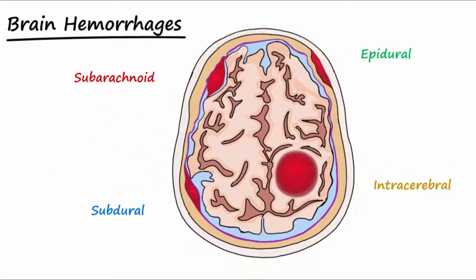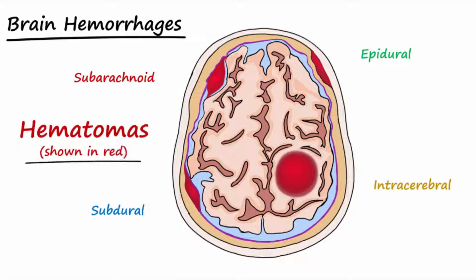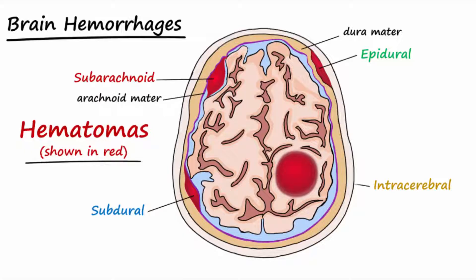The name of the hemorrhage is based on where the hematoma, or collection of blood, accumulates. Epidural accumulates on top of the dura mater. Subdural is below the dura mater. Subarachnoid is underneath the arachnoid mater. And intracerebral is within the brain itself.